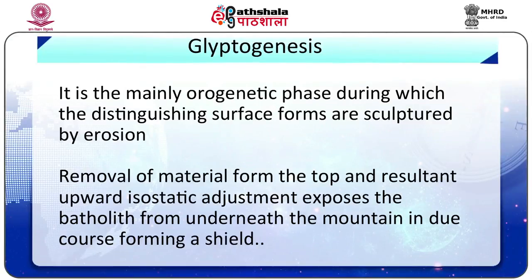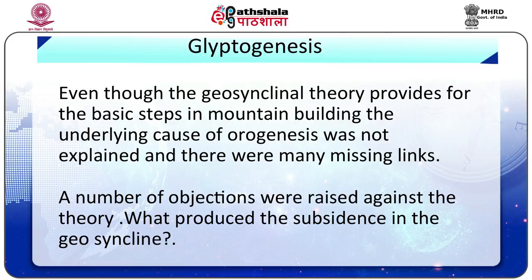The next stage is glyptogenesis — the mainly post-orogenetic phase during which the distinguishing surface forms are sculpted by erosion. Removal of material from the top and resultant upward isostatic adjustment exposes the batholiths from underneath, and the mountain is in due course formed into a shield. Though the geosynclinal theory provides the basic steps in mountain building, the underlying cause of orogenesis was not explained and there were many missing links.